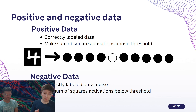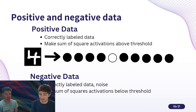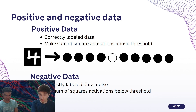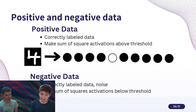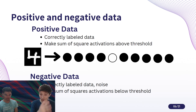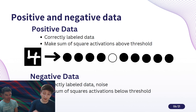You might be wondering how you can get a loss at each layer. The idea is you use what is called positive and negative data. Positive data is simply correctly labeled training data. Throughout this, we'll be using the MNIST dataset, as that is what Hinton used in his original paper. So if we have a picture of the number four, we'll have the one-hot encoding that corresponds to a four — that's positive data. Negative data is just like positive data, except it has the incorrect label. Our goal is to maximize the sum of squared activations when given positive data, wanting this sum of squares to be above a certain threshold, while for negative data we want to minimize it below a certain threshold.